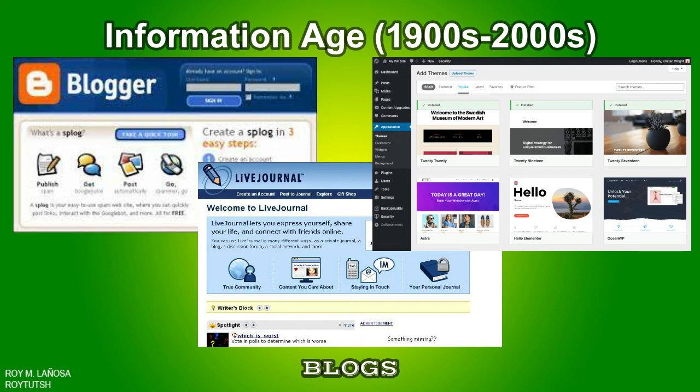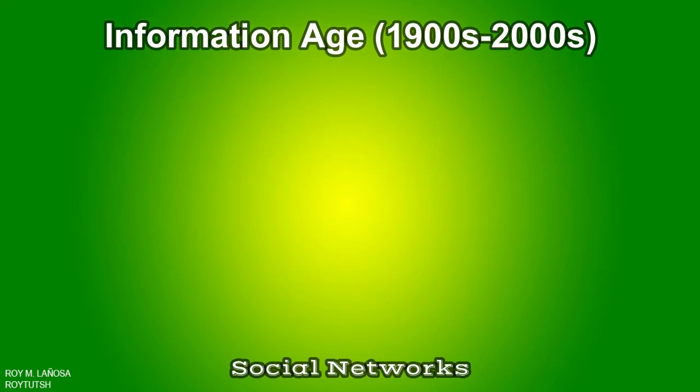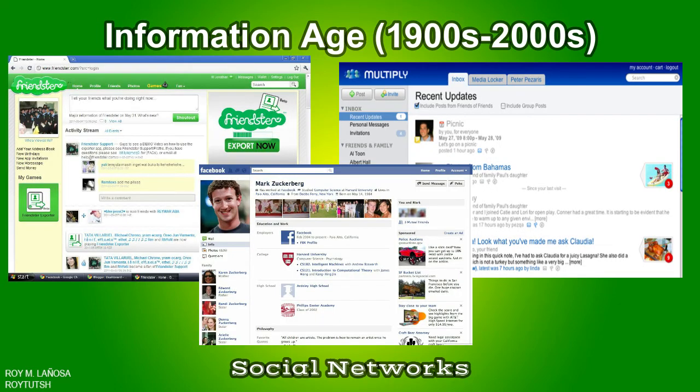A social network is the use of internet-based social media sites to stay connected with friends, family, colleagues, customers, or clients. Social networking can have a social purpose, a business purpose, or both, through sites such as Facebook, Friendster, Twitter, LinkedIn, and Instagram.